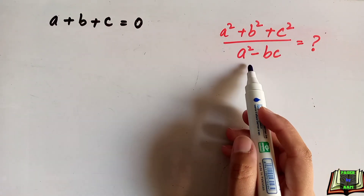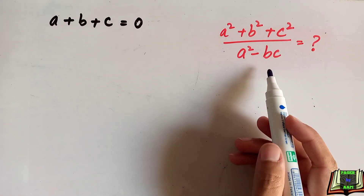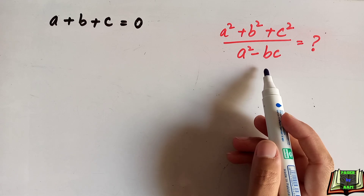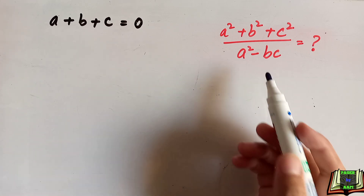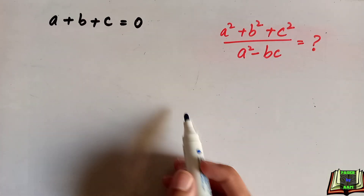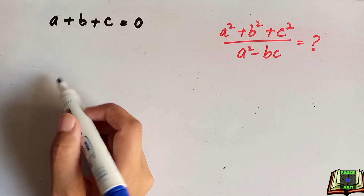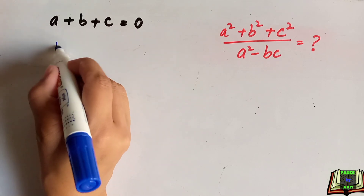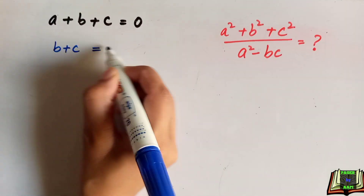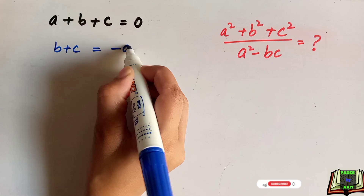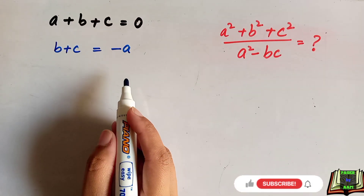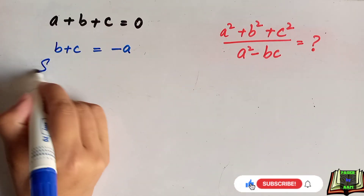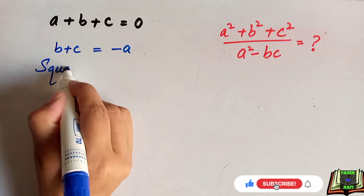Here the thing which is given is: a plus b plus c is equal to zero, and we have to find a² plus b² plus c² divided by a² minus bc. From the given equation a plus b plus c equals zero, we will move a to the right hand side, so we can write it as b plus c equals minus a.